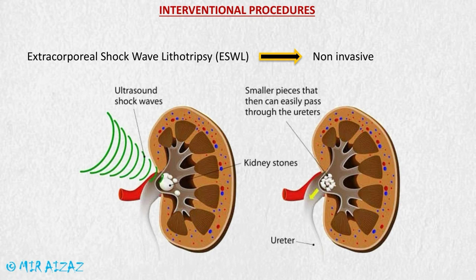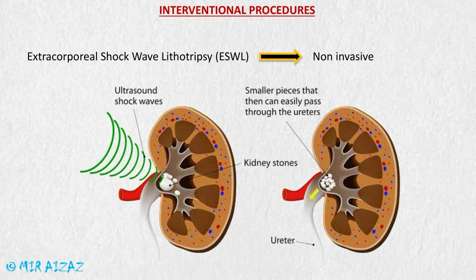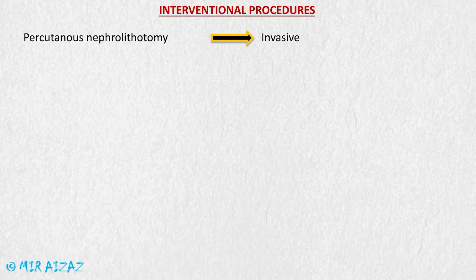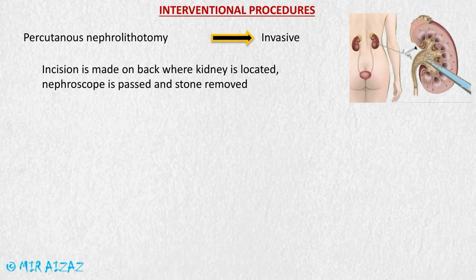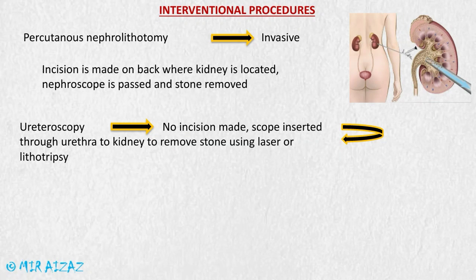Interventional procedures include extracorporeal shock wave lithotripsy (ESWL), a non-invasive procedure where ultrasound shock waves break stones into smaller pieces that can pass through the urinary system. Percutaneous nephrolithotomy is an invasive procedure involving an incision in the patient's back near the kidneys, through which a nephroscope is introduced to remove the stones. Ureteroscopy requires no incision — a scope is inserted through the urethra to the kidneys, and stones are removed using laser or lithotripsy.